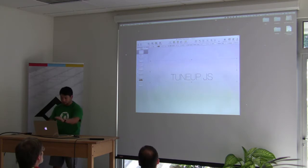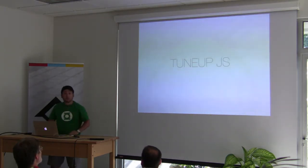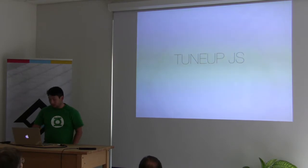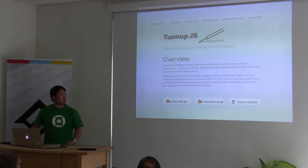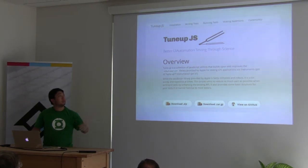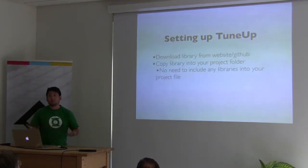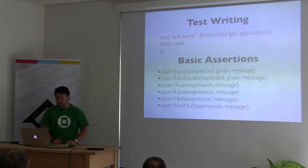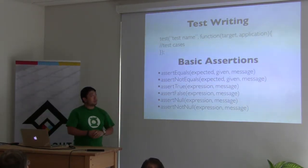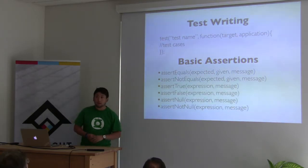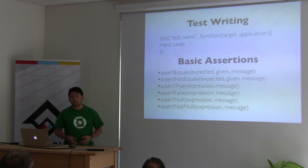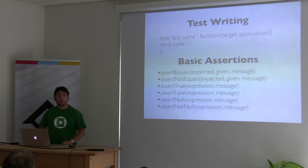I'm going to do a presentation on tune-up.js, which is an automation tool that runs a lot more easily from the command line versus Instruments. This is their web page — it's fairly simple to pull it down, and all you need to do is copy the project files so you can run the executable. You don't have to include anything into your project file. For basic test case writing, you have your test name, a function, and basic assertions — equal, not equal — all within their library.